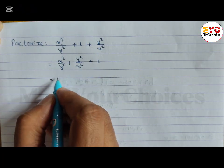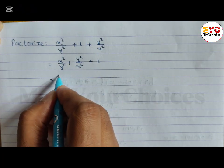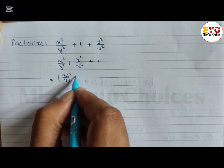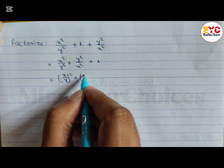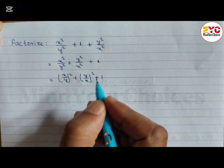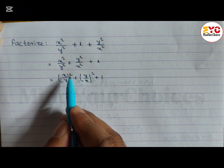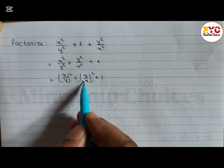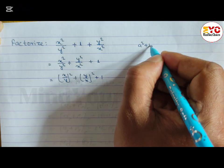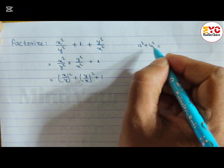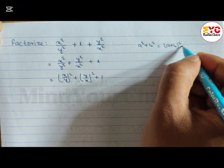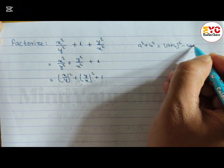Now we convert this into the form of a whole square: x by y whole square plus y by x whole square plus 1. You can see this is in the form of a squared plus b squared. The formula for a squared plus b squared is a plus b whole square minus 2ab.